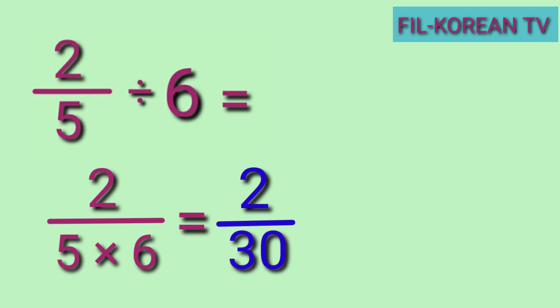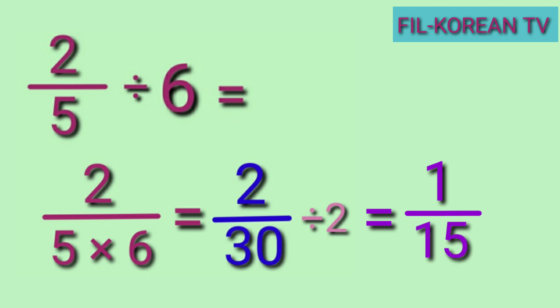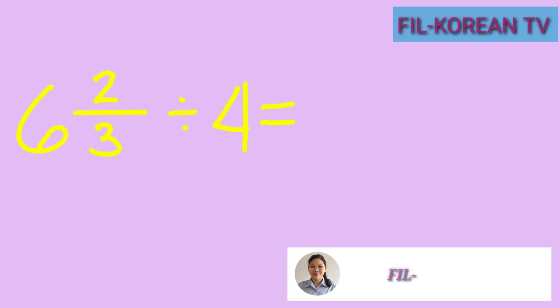Next step: reduce the fraction to lowest term. We divide the numerator and the denominator by their GCF. The GCF of 2 and 30 is 2. So 2 divided by 2 equals 1, and 30 divided by 2 equals 15. The answer is 1 fifteenth.